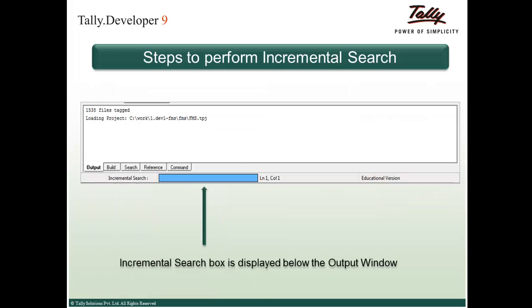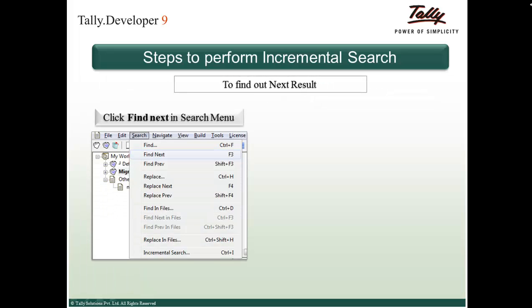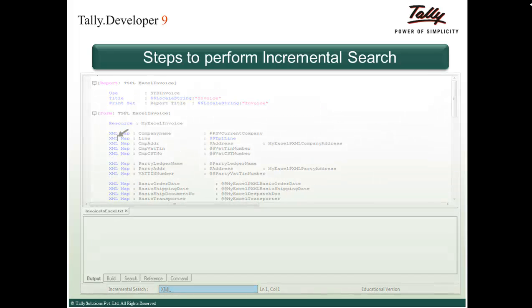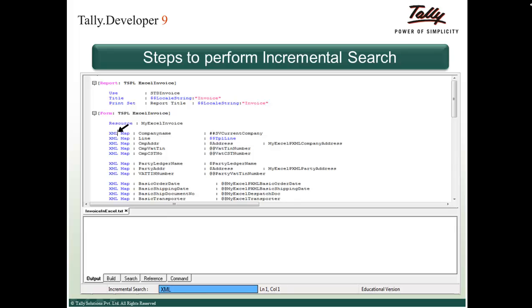Once the Incremental Search option is selected, the Incremental Search box is displayed below the output window, highlighted in blue. With the cursor at the beginning of the file, when we type 'X', the cursor moves to the first reference where X is found. Typing 'M' moves the cursor to the first reference of 'XM'. Typing 'L' moves it to the reference of 'XML', thus allowing progressive search as you type. To find the next result, click Find Next in the search menu or press F3. To find the previous result, click Find Prev or press Shift+F3.